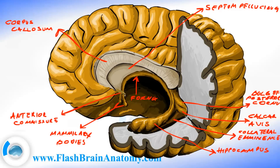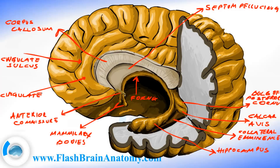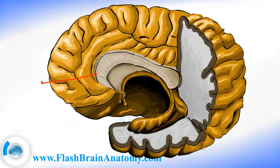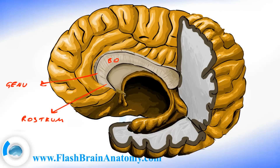Then we had the cingulate sulcus and the cingulate gyrus. This part over here was the genu of the corpus callosum, which means the knee — it's the most anterior part. This part was the rostrum. This was the body of the corpus callosum, and this over here was the splenium of the corpus callosum.